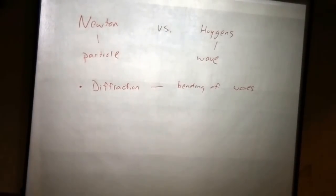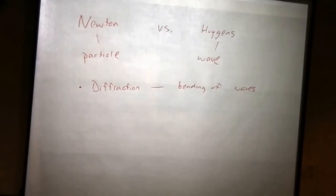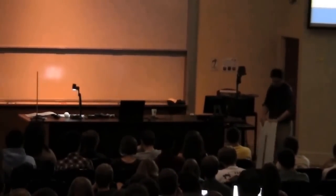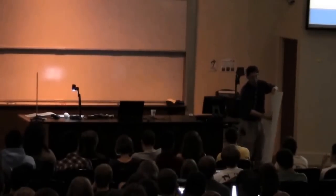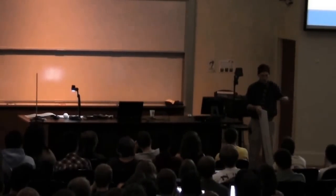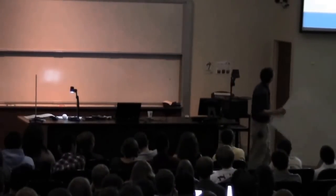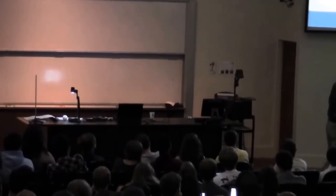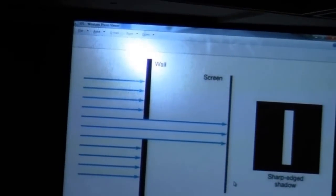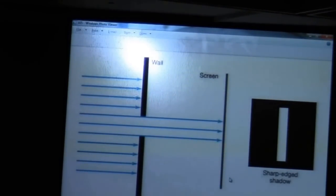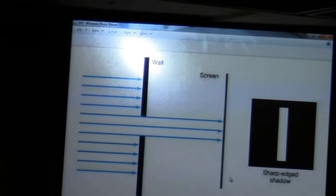Here I have a wall with a slit cut out of it. If I throw particles up against this — like shooting it with buckshot — the buckshot that hits the slit goes through and makes a shadow shaped exactly like the slit. With particles, you just trace out the shape of the slit. So if light is a particle, some light will be blocked, some will go through the slit and hit the screen — our detector. That's what we expect if light is a particle. If light is a wave, it should look a little different.